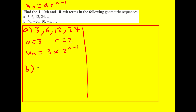You can then find u_10 by substituting n = 10: it's 3 times 2 to the 9. You could also reason it directly — for the third term it's 3 × 2², so for the 10th term it's 3 × 2⁹. Either way works, but using the nth term formula is easier. That gives 1536.